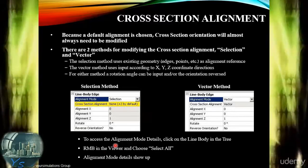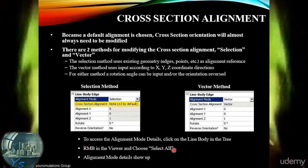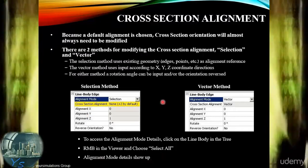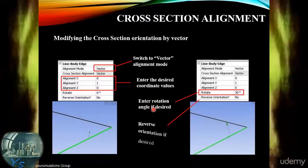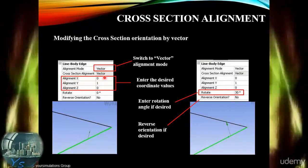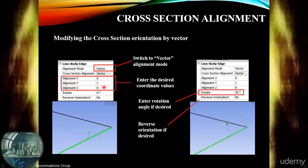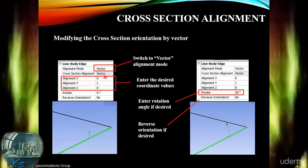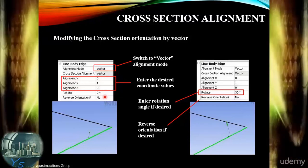To access the alignment mode, click on the line body entry, right-click in the viewer and select all, and the alignment mode details will show up. Here we can see the vector option is listed — the vector used for alignment of the cross-section is 0, 1, 0 with no rotation and no reverse orientation.